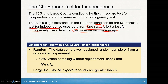When checking the random condition, the data still need to come from a well-designed random sample or from a randomized experiment where we're randomly allocating treatments. The 10% condition still holds to test for independence, and all expected counts should be greater than five.